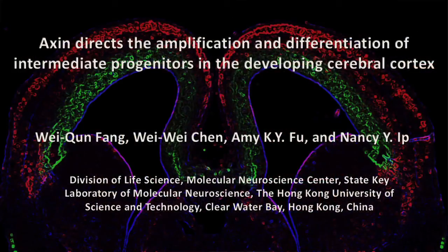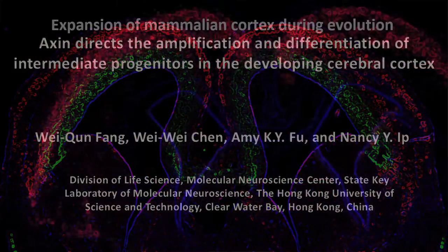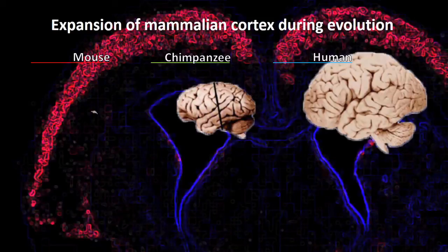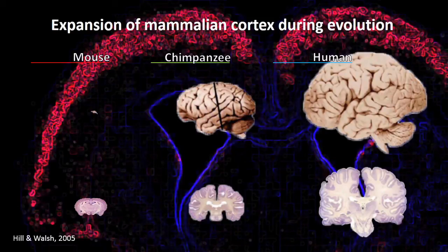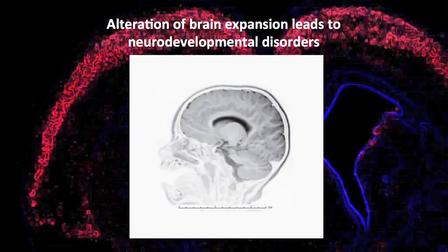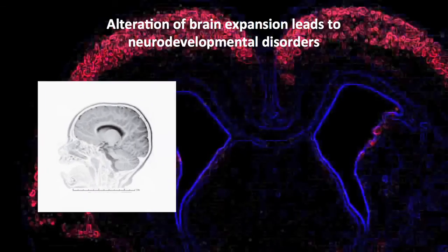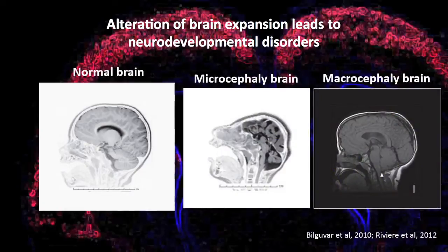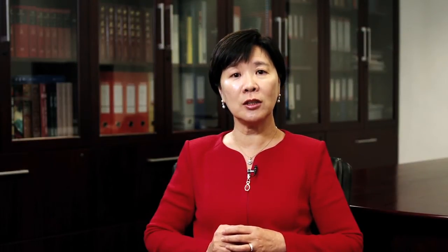The increase in mammalian brain size during evolution is thought to underlie the development of higher cognitive functions. Perturbations of the process of cortical expansion can result in either a smaller or larger brain — microcephaly or macrocephaly respectively. However, the molecular signals controlling proper brain size are largely unknown.